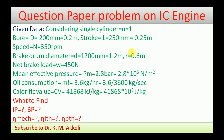First we will list the given data. We consider a single cylinder, so N (number of cylinders) = 1. Bore diameter D = 200 mm = 0.2 m. Stroke length L = 250 mm = 0.25 m. Speed n = 350 rpm. Brake drum diameter = 1200 mm = 1.2 m, which gives radius R = 0.6 m.